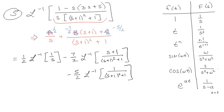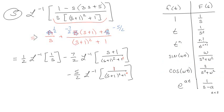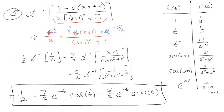Now for the cosine function I need ω², so it's this 1 squared. And for the sine function, I need ω² with an ω on top — and that's already perfect. The inverse Laplace of 1 over s is just 1. Minus 7 halves, shifted e^(-t), and then cosine with ω equal to 1 — so it's just cosine of t. Minus 5 halves shifted, and sine of t with ω equal to 1. So the result is 1/2 minus 7/2 times e^(-t) cosine(t) minus 5/2 times e^(-t) sine(t).